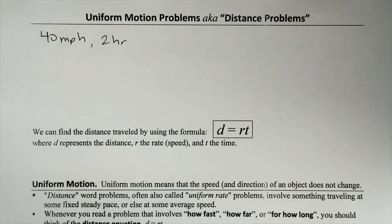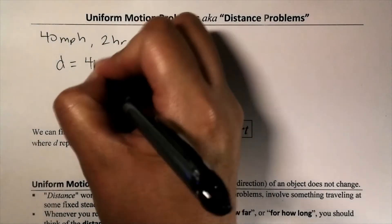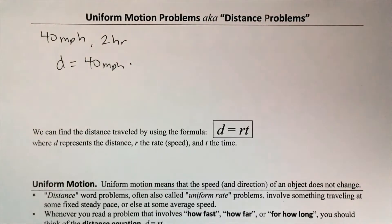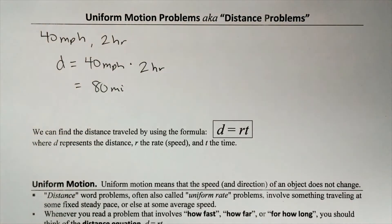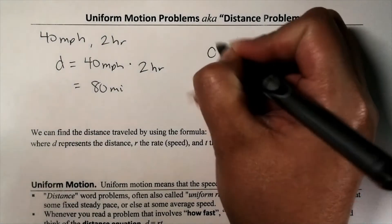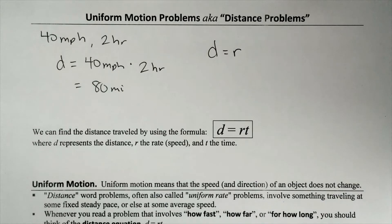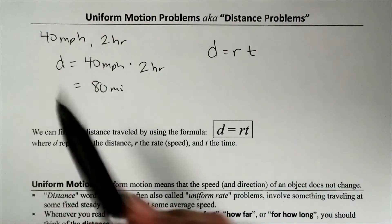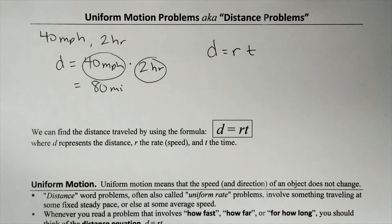You don't need to bust out the distance formula right away — you just know that to find the distance traveled, you take the speed of 40 and multiply it by however long we drove, which is two hours, giving us 80. So if I drove at 40 miles an hour for two hours, how far did I drive? 80 miles. With that, let's officially introduce the formula used to calculate distance: distance equals rate times time, or d = rt.